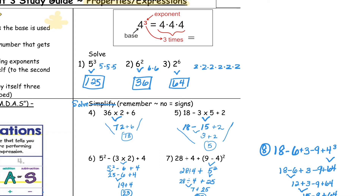For numbers 1, 2, and 3, you can see that they were exponents. An exponent is the smaller number that goes along with the base. It tells how many times to multiply the base by itself. So for number 1, the answer was 125. For number 2, the answer was 36. Number 3, the answer was 64.